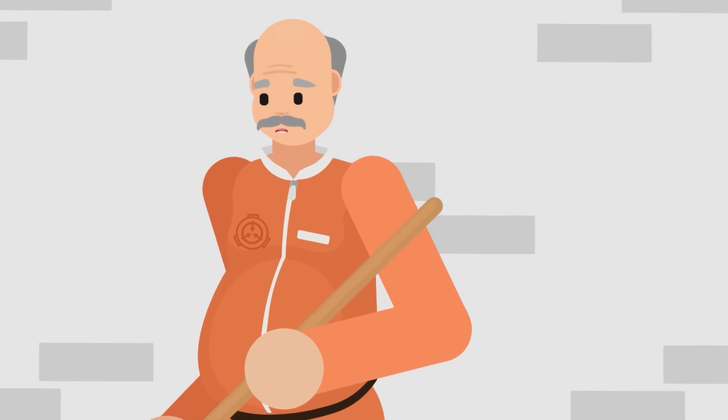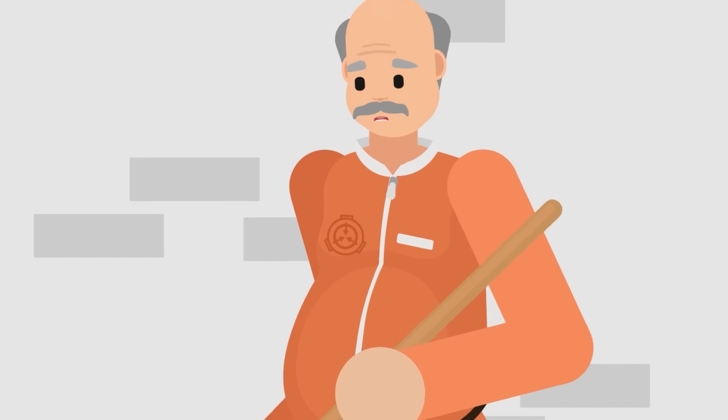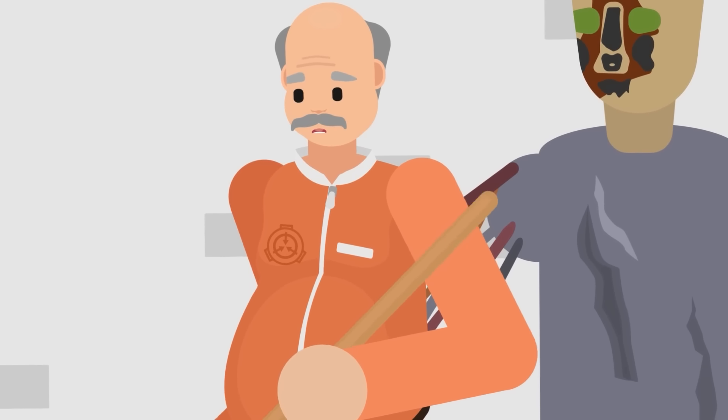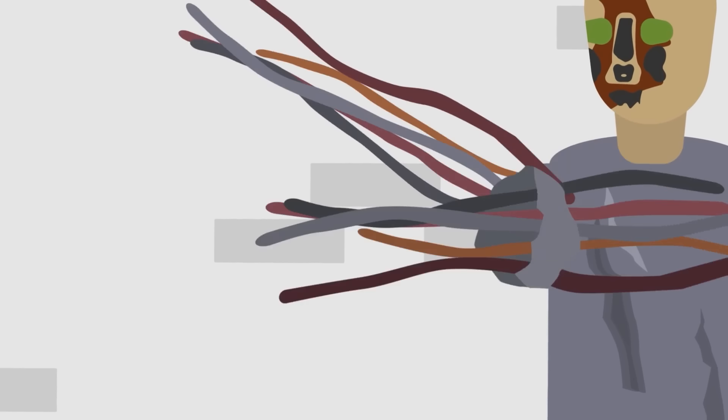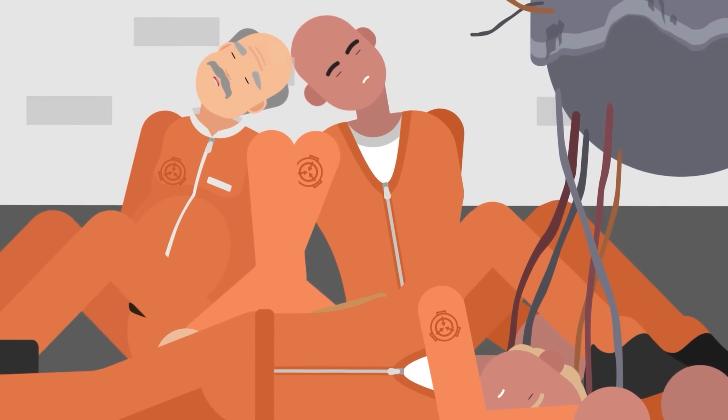But the two members of personnel assigned to observe SCP-173 had blinked, thinking they were safe. With the third person's back turned, SCP-173 had moved, snapping all of their necks. None of them had seen what killed them.